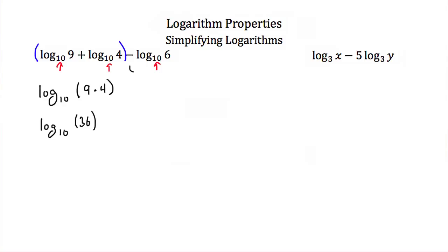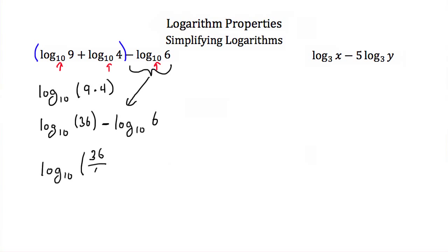Now let's not forget the log of six. Bringing this down, we still have minus the log base ten of six, and since these are subtracted, we can use the quotient property. This is the same as the log base ten of thirty-six divided by six. Because these two logs are subtracted, when we convert to one log our numbers are divided. Thirty-six divided by six is just six, so this gives us the log base ten of six.